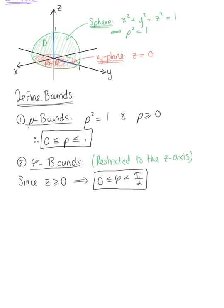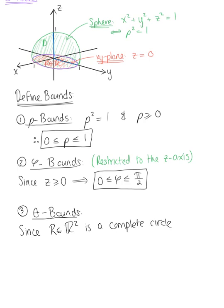Last but not least, to find the theta bounds, we think about the two-dimensional region R in the xy plane, or the solid's projection into the xy plane. Since R in R2 is a complete circle, this tells us that theta can be greater than or equal to 0 and less than or equal to 2 pi — a complete circle. So we have our three bounds: the bounds for rho, phi, and theta.